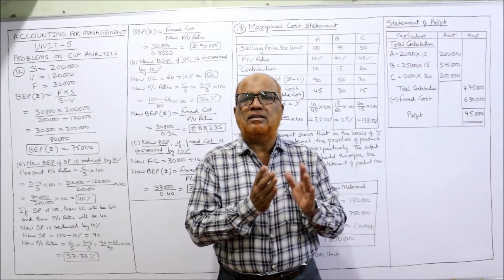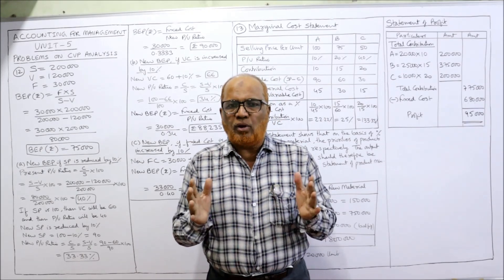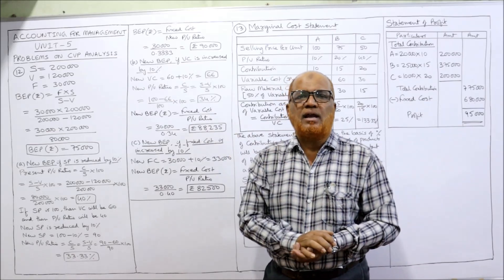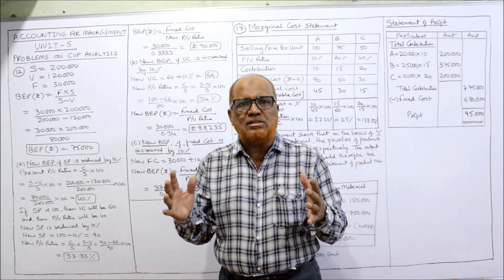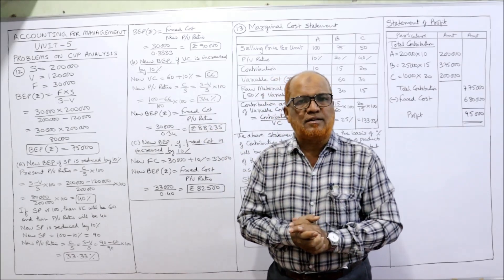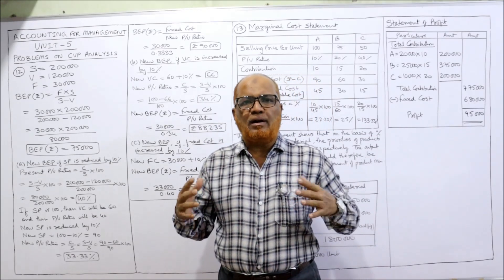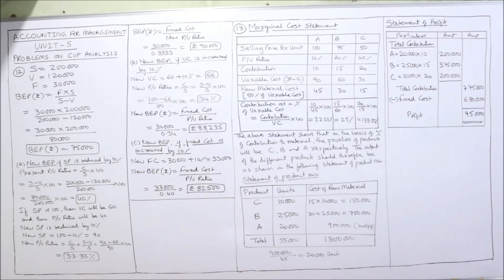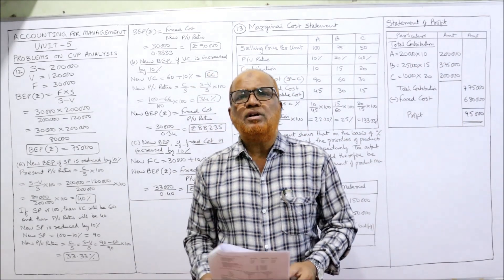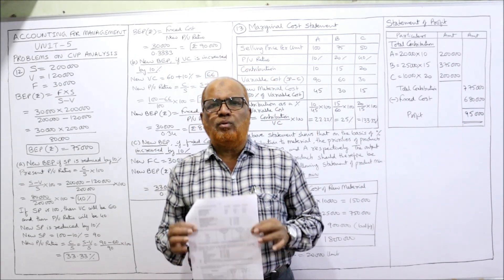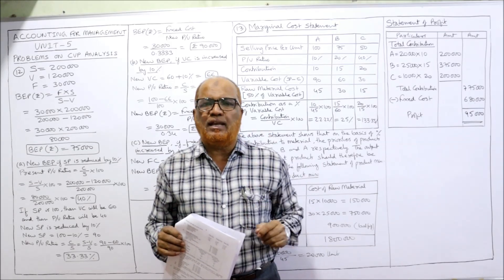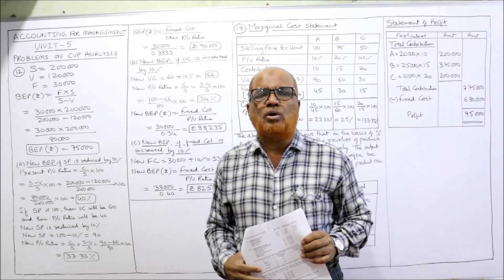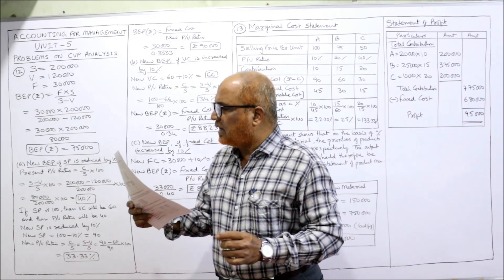These problems are based on the formulae I already explained in the starting theory videos. If you have not watched those, go to the playlist of my channel, select the subject 'Accounting for Management,' and select the CVP analysis videos. Be perfect on the concepts and formulas, then you can easily understand the problems. Every problem will be a different type. Before starting, take a screenshot of problems 12 and 13.